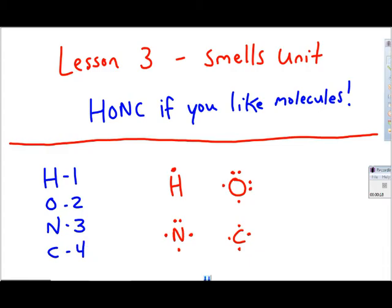The rule tells us that in order to get a full outer shell, hydrogen needs to form one bond. Oxygen to get a full outer shell, full valence shell, needs to form two bonds.